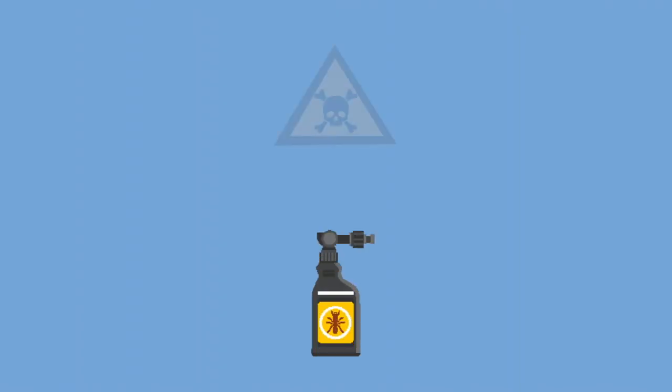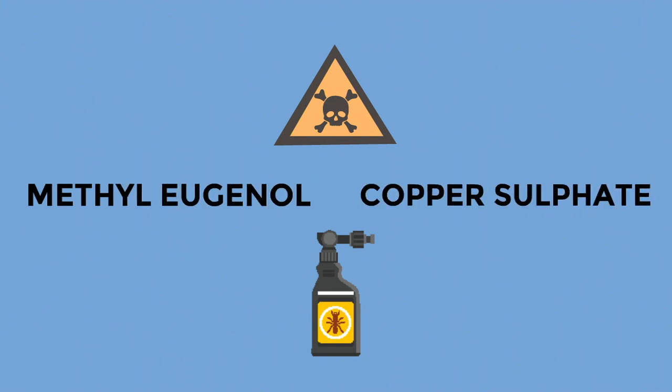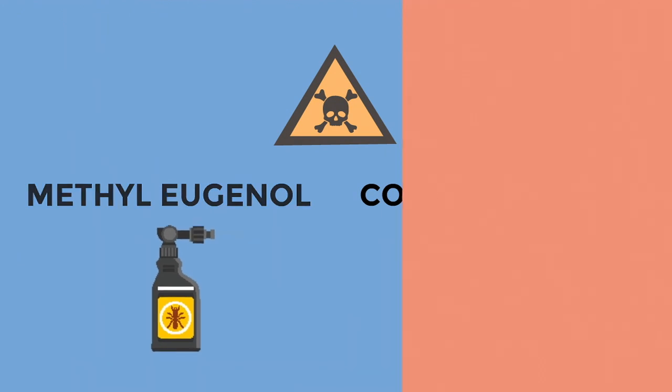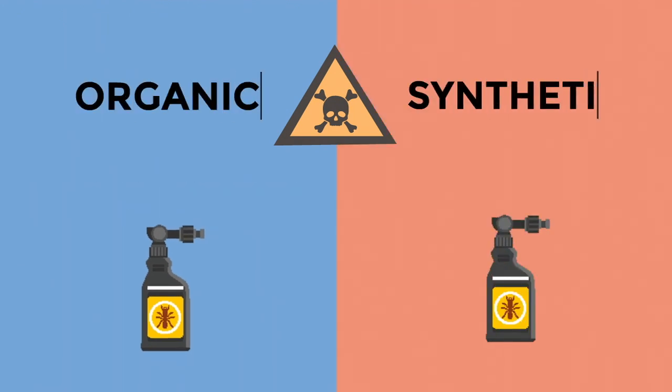Most organic pesticides are natural toxins to humans, such as methyl eugenol and copper sulfate. Well what is the difference between regular and organic pesticides? Not a lot surprisingly.